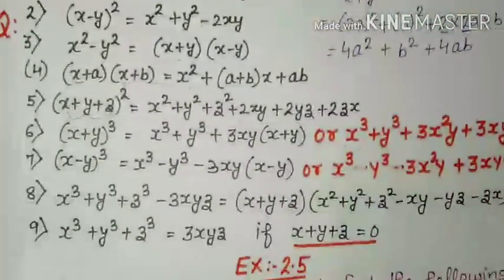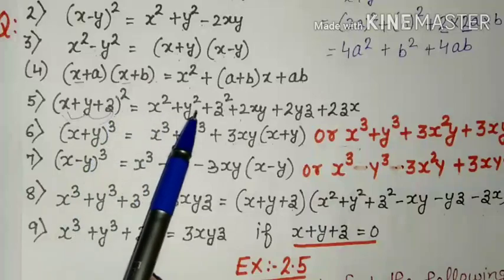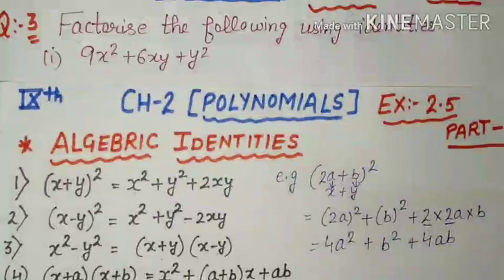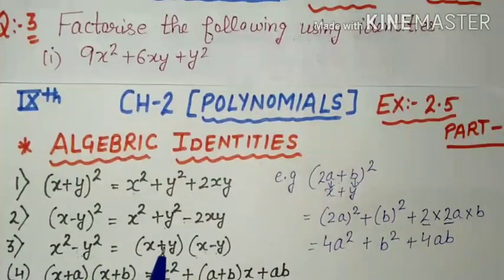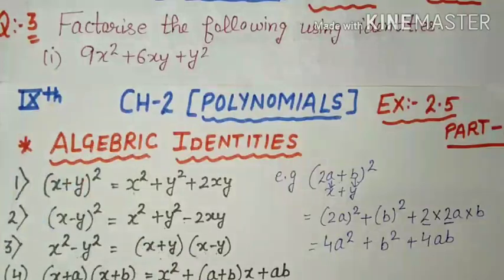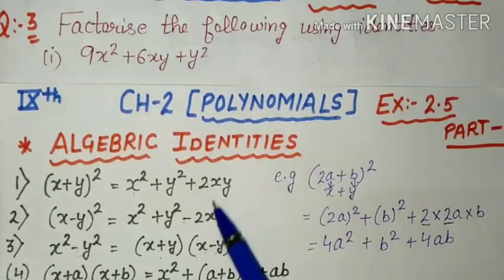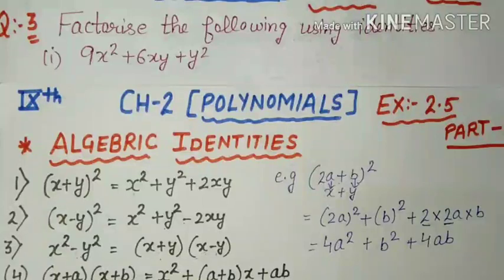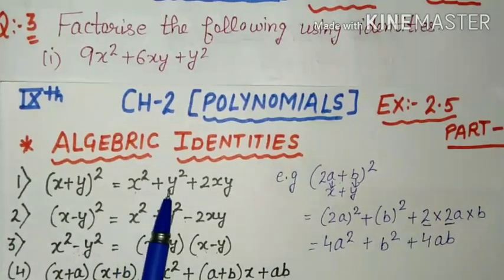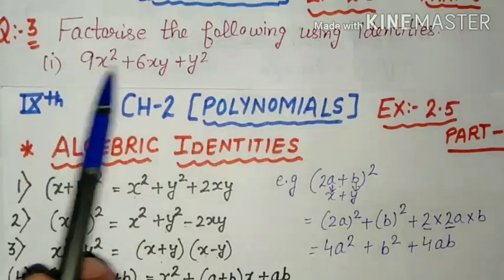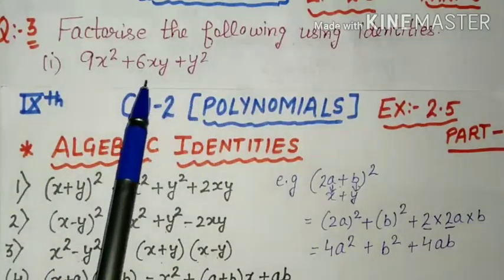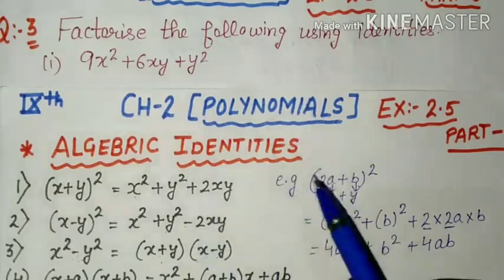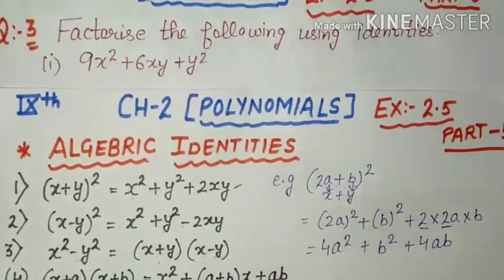Hamare paas fifth identity bhi hai jisme 3 terms squares wali hai — means woh identity to isme use nahi ho rahi. Aur jo third identity hai, usko humne two brackets ki form mein likha hai — woh bhi yahan use nahi ho rahi. So bachti hamare paas square wali yeh 2 identities hain. In dono mein se koi ek identity isme use ho rahi hai. Hamare paas x² plus y² — do term squares ki hai. Lekin jo third term hai, woh plus ki hai. Isme third term plus ki hai, isme third term minus ki hai. Means hamare kaun si identity use ho rahi hai? First wali identity.